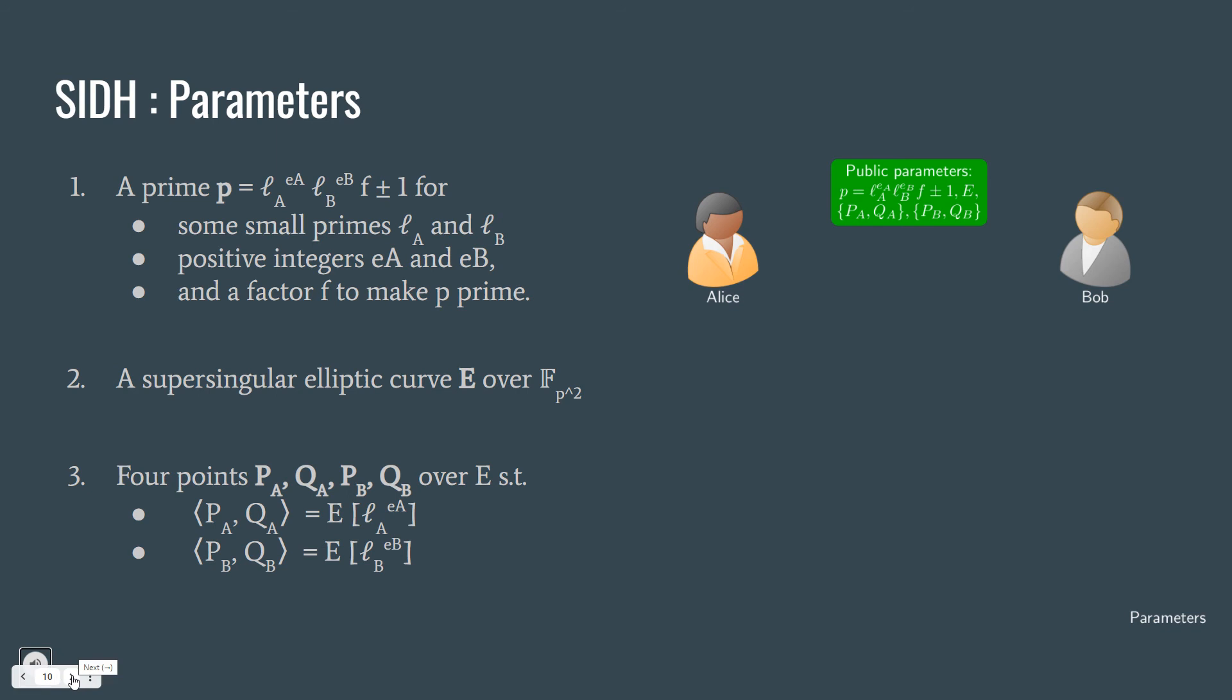SIDH parameters. We will be given a prime p in a special format: La to the ea times Lb to the eb times f plus or minus 1. Here, La and Lb are small primes. ea and eb are positive integers as exponents of La and Lb. f is just a factor to make p prime. Secondly, we will be given a supersingular elliptic curve E over Fp squared. And we will be given four points Pa, Qa, Pb, Qb over E such that Pa and Qa generates the La^ea torsion group of E, and Pb, Qb generates the Lb^eb torsion group of E.